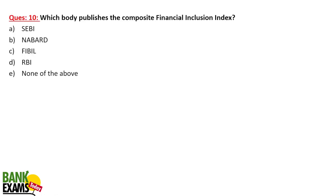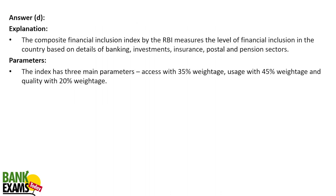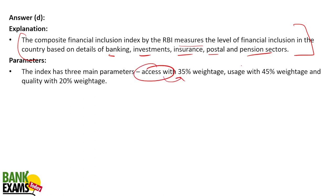The RBI publishes the Composite Financial Inclusion Index. Its purpose is to measure the level of financial inclusion in the country based on banking, investment, insurance, postal, and pension sectors. The index has three major parameters: Access with 35% weightage, Usage with 45% weightage, and Quality with 20% weightage.